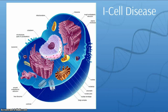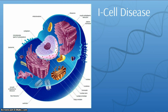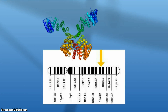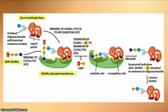Patients with I-cell disease have a mutation in the GNPTAB gene. This gene is responsible for producing the enzyme GlcNAc phosphotransferase, which is normally found in the Golgi apparatus. GlcNAc phosphotransferase recognizes the signal patch on the acid hydrolase in the Golgi apparatus and catalyzes the addition of mannose-6-phosphate to the N-linked oligosaccharide chain. The absence of GlcNAc phosphotransferase results in the inability of the lysosomal hydrolase to be localized into the lysosome. Reduced amounts of GlcNAc phosphotransferase results in a clinically similar disease known as pseudo-Hurler polydystrophy.